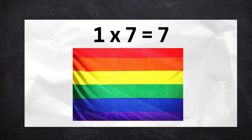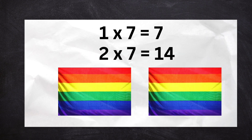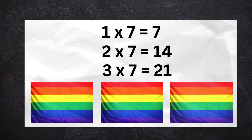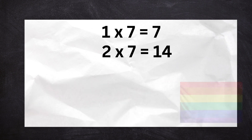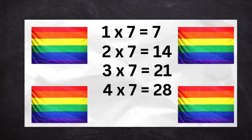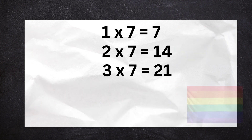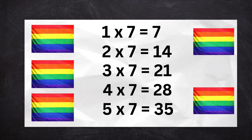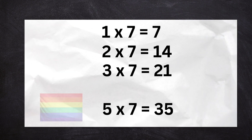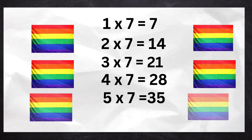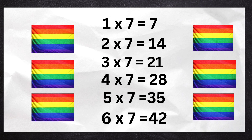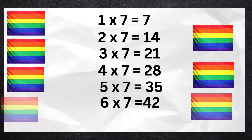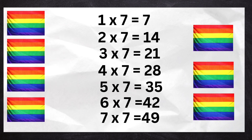1 7 saw 7. 2 7 saw 14. 3 7 saw 21. 4 7 saw 28. 5 7 saw 35. 6 7 saw 42. 7 7 saw 49.